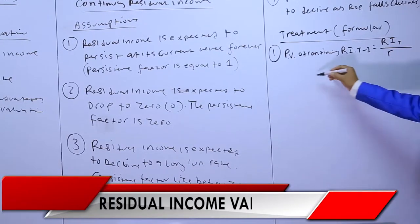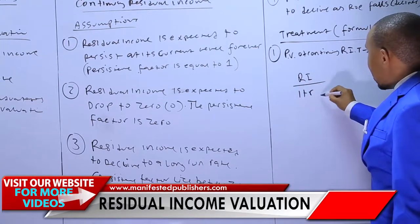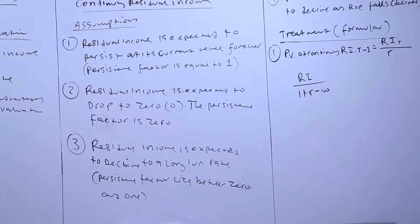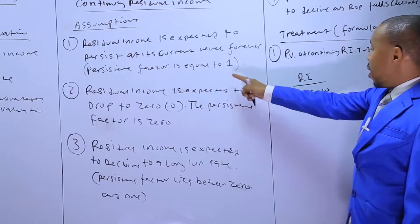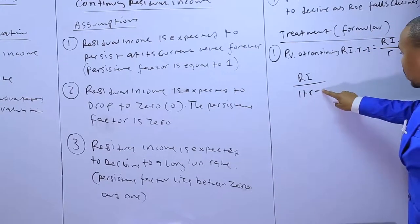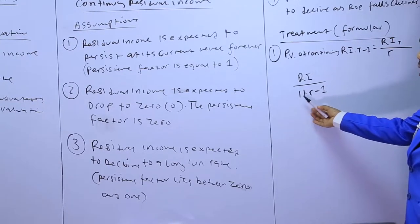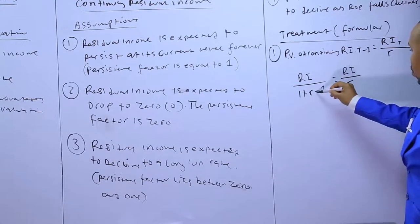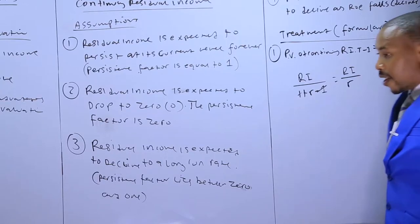How we arrive at this: the RI is discounted against one plus r, but there is a persistence factor denoted by w. In this first case, w is equal to one. When we slot in one, the positive one and negative one cancel out, so it simply remains as RI discounted against r. That is what the analyst should be able to apply in the financial services industry.